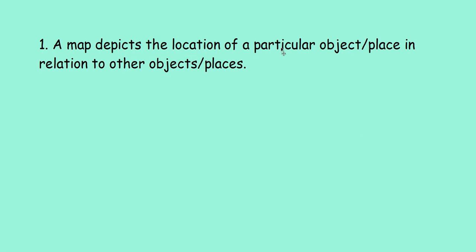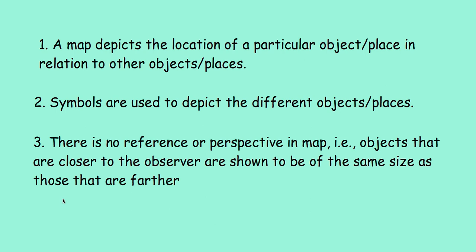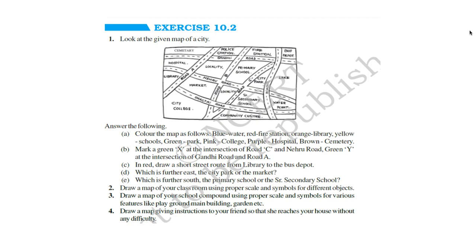Thus, we can summarize. A map depicts the location of a particular object or place in relation to other objects or places. Symbols are used to depict different objects or places. There is no reference or perspective in a map. Objects that are closer to the observer are shown to be the same size as those that are farther. Here is exercise 10.2. Do it yourself. That is all for today's class. Have a nice day.